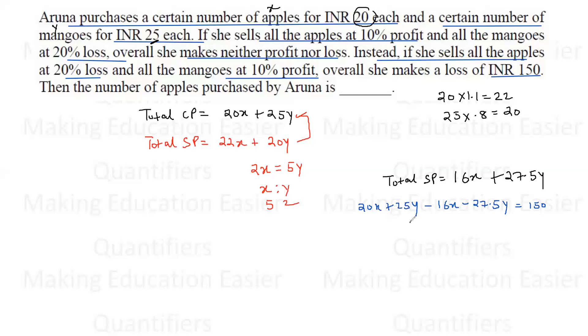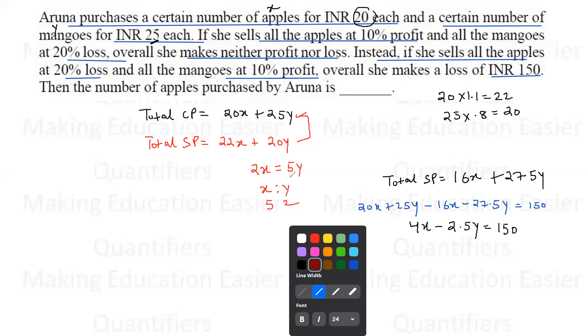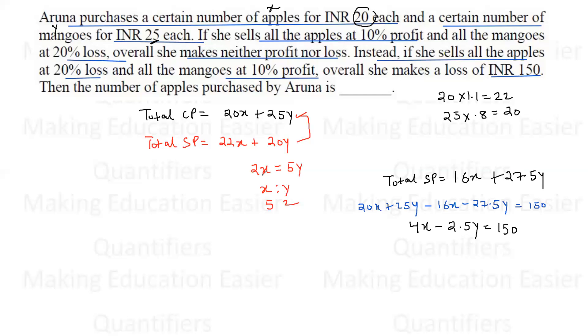If we solve it, we get 4X - 2.5Y = 150. From the first equation, 2X = 5Y, so Y = 2X/5. Substituting, we get 4X - 2.5 times 2X/5 = 150.